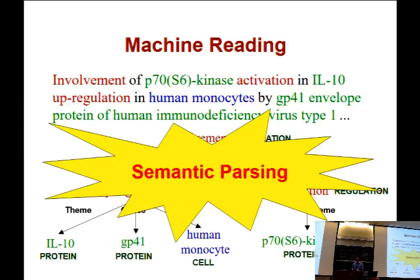If you think about it, it's basically a semantic parsing problem. In syntax parsing you want to get noun phrases and verb phrases. The only difference here is that our non-terminals are just semantic categories — like activation, inhibition, theme, cause, and so forth. The challenge is that people are just so creative in figuring out different ways to say the same thing.